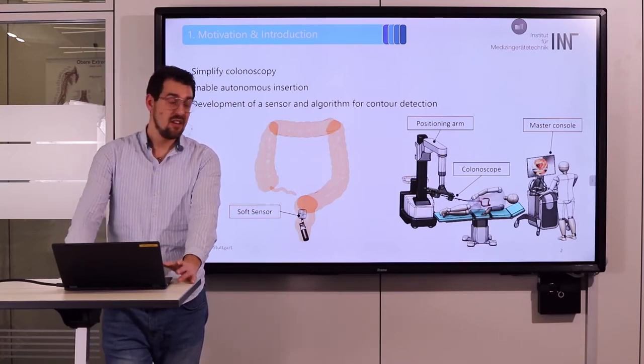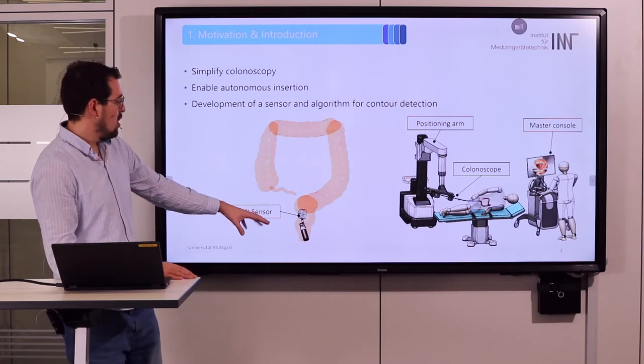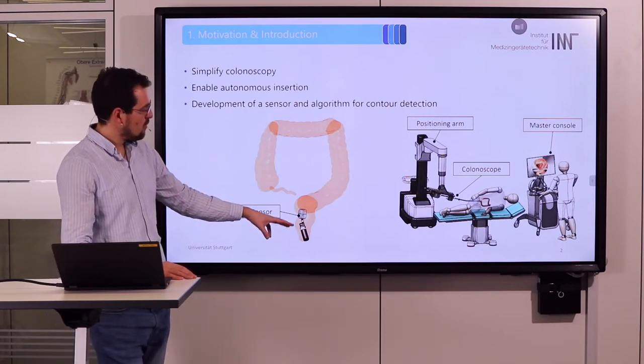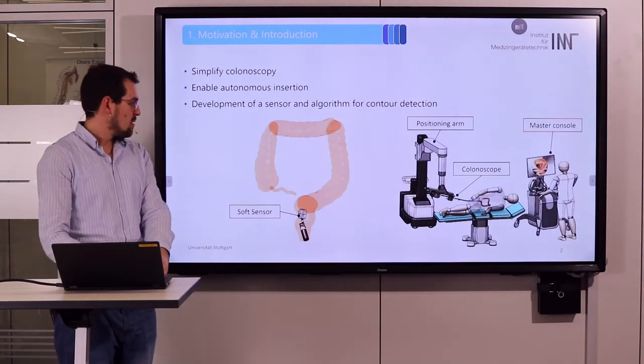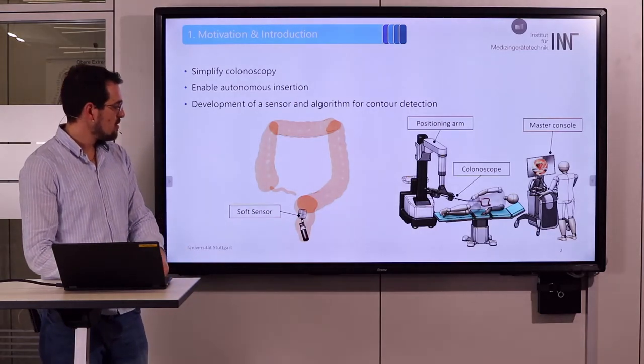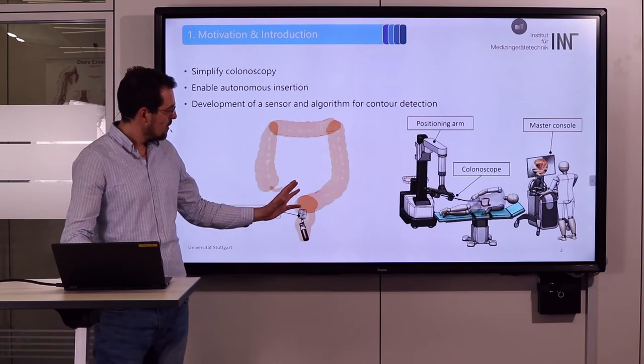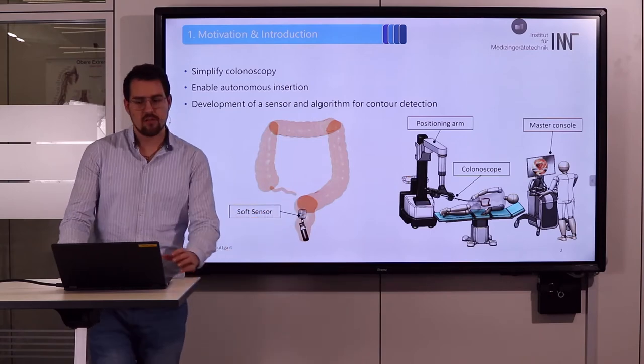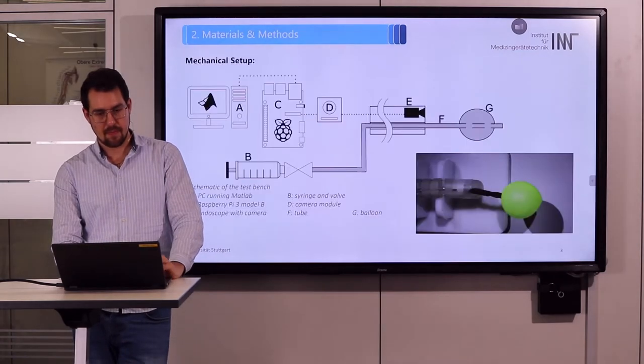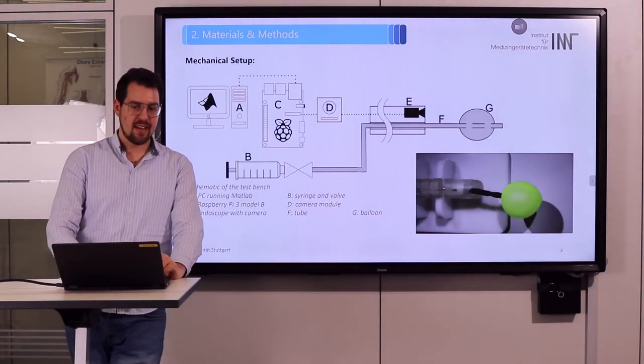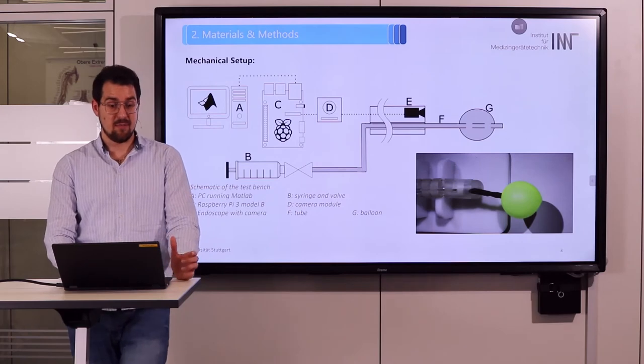For this we want to use a soft sensor placed in front of the head of the colonoscope. Because it's flexibly mounted in front of the endoscope, it is distended from the intestine and follows the curved pathway. Therefore the mechanical setup is rather simple.